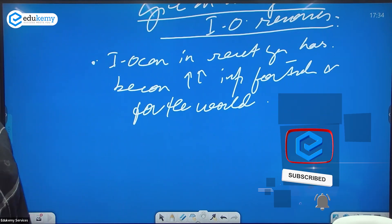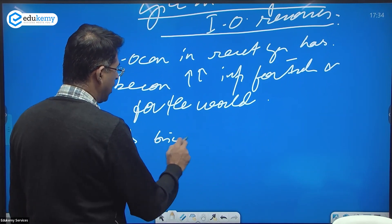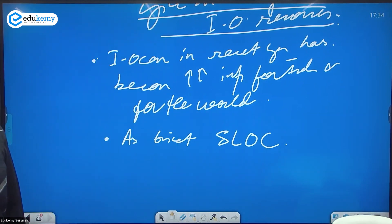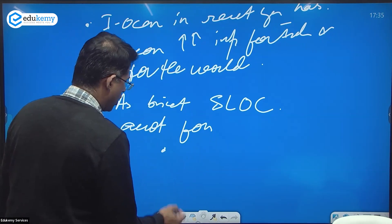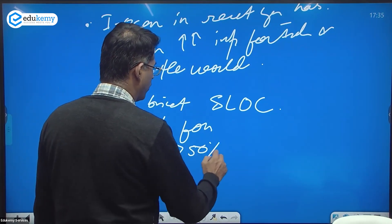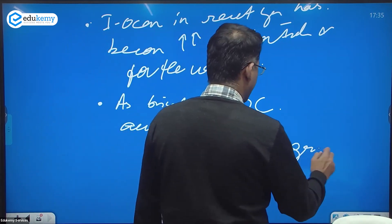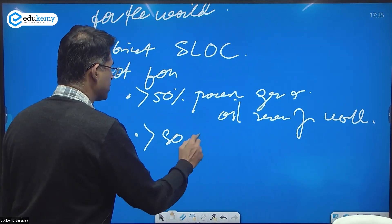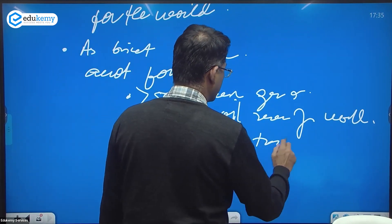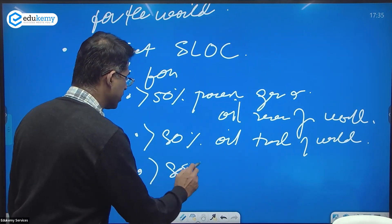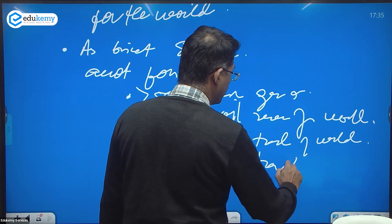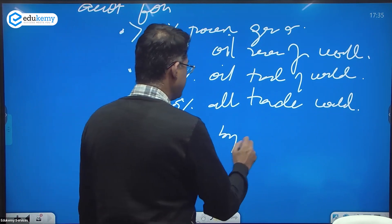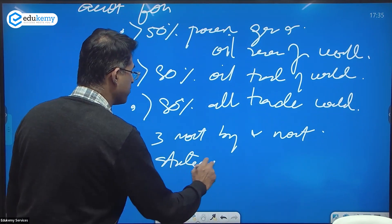Indian Ocean has become increasingly important for India and the world as one of the busiest sea lines of communication. It accounts for more than 50 percent of proven gas and oil reserves of the world, more than 80 percent of oil trade of the world, and more than 80 percent of all trade of the world.